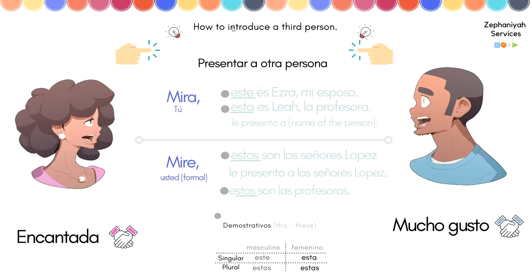Next, how to introduce a third person — 'presentar a otra persona.' If you have any questions, you can leave them in the comments below and I'll gladly respond. So if you're in a group of people and you want to introduce somebody, you say 'mira' — oh, look — and then introduce them.